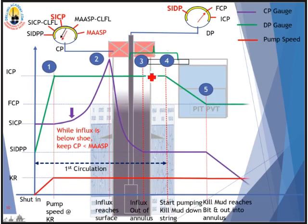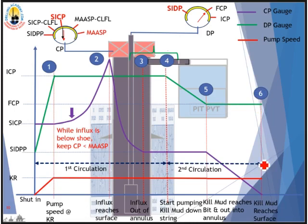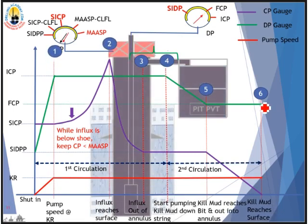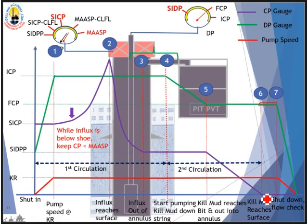Kill mud is now filling the annulus — casing pressure drops while drillpipe pressure remains constant at FCP. Continue pumping until kill mud reaches surface, then pump a little more to ensure kill mud is all the way around. During this final pumping phase, drillpipe pressure remains constant and casing pressure is at zero. Once confirmed that kill mud is all the way around, shut down the pump and drillpipe pressure will drop all the way to zero. This is the end of the second circulation — kill mud is all the way around.